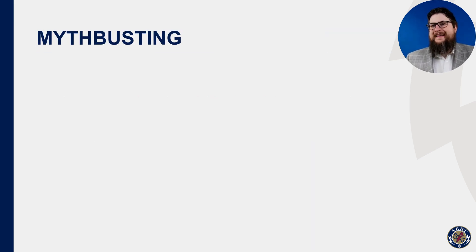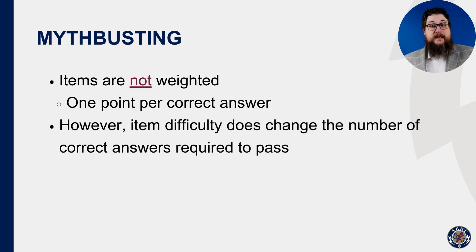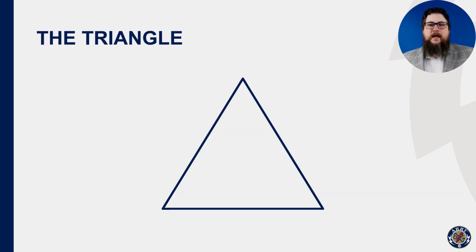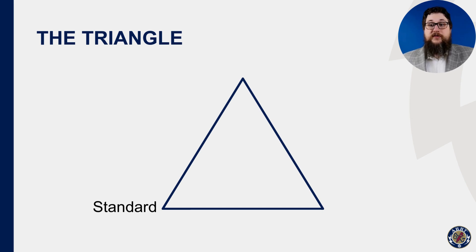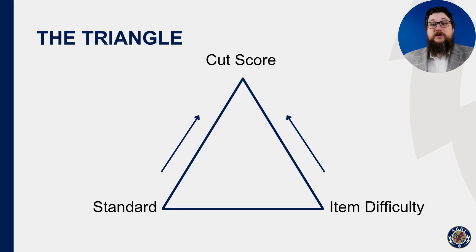It is a common misconception that exam items are weighted, such that correct answers are worth more when the item is more difficult. This isn't true. Each correct answer is worth one point. But to keep the exam fair, we calculate a unique cut score for each form based on that overall standard. A form with harder items is going to take fewer correct answers to reach the same standard. ARRT uses a statistical method called Item Response Theory to calculate item difficulty and cut score. We can envision this method as a triangle: the standard approved by the Board of Trustees in the left corner, item difficulty on the right, and the cut score for a given form at the top. With any two of these values, we can calculate the third — so we can use the passing standard along with the item difficulty to calculate the cut score on a specific form.